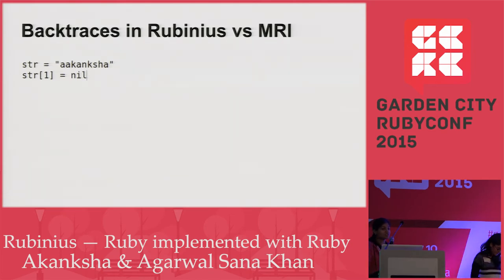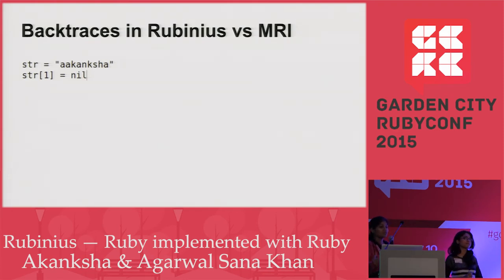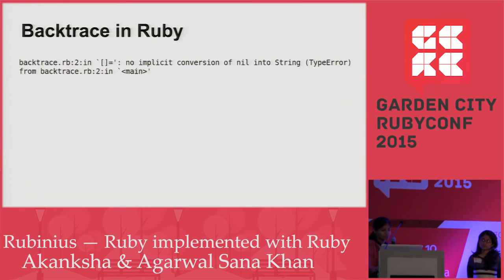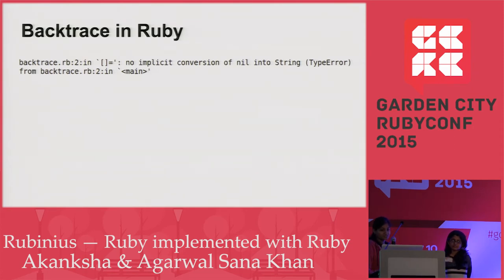This is one of the most important features in Rubinius: backtraces. When we work on Ruby code we normally come across many backtraces, and those are really helpful in debugging. Here I have a string and I am replacing the character at the first position by nil, which is not allowed because it cannot be converted to a string. This is the backtrace in MRI — it just tells you there is no implicit conversion of nil into string and gives you the location where the error happened.